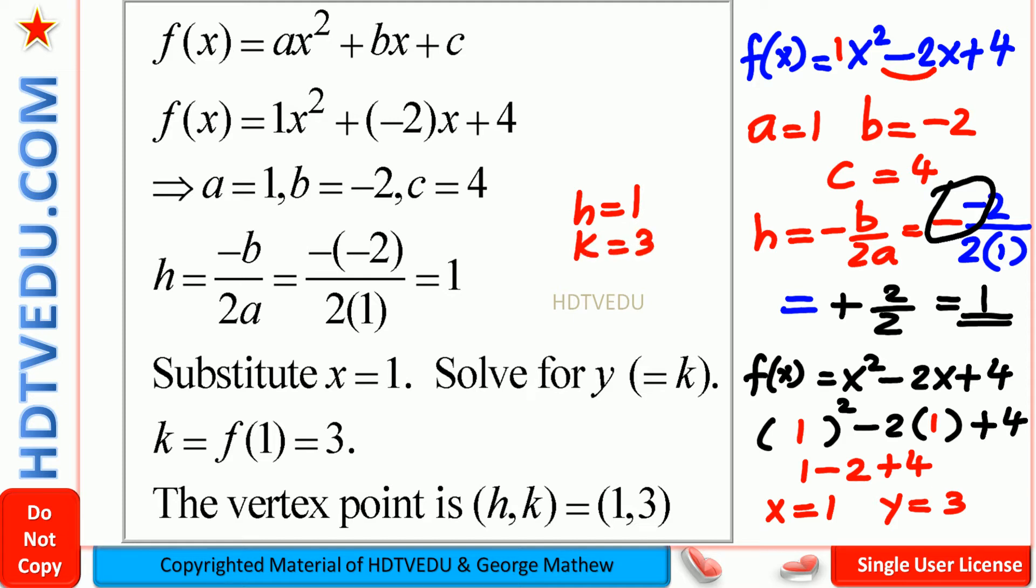And that is what we have done here. f of x equals x squared plus bx plus c. a is 1, b is equal to negative 2, c equals 4. h equals negative b over 2a. So negative of negative 2 is positive 2. Positive 2 divided by 2 is 1. So h is equal to 1.